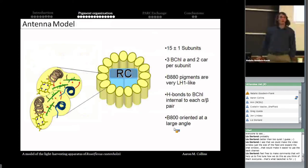So let's put together an antenna model of what I would expect the LH-RC from Roseiflexus to look like. From the biochemistry, I would expect that there would be 15 plus or minus one subunits surrounding the reaction center. And that in each one of these subunits, I'd expect to find three bacteriochlorophyll molecules here in green are the B880 pigments, and in yellow are the 800 nanometer pigments. The B880 pigments are going to be very LH1-like, as we would say, just from the primary sequence as well as the resonance Raman. And that the hydrogen bonds to these bacteriochlorophyll molecules, we would expect to be internal to each of the alpha-beta pairs. That's indicated here by these red arrows. And lastly, kind of the anomaly in this complex is how the B800 nanometer pigment is oriented at a large angle. And that's indicated here in yellow.